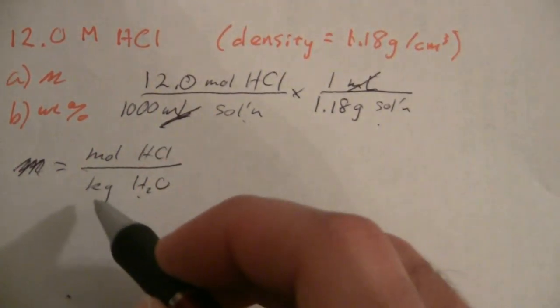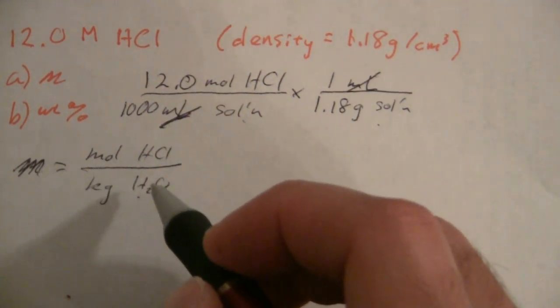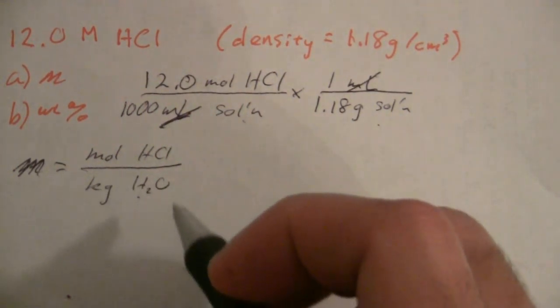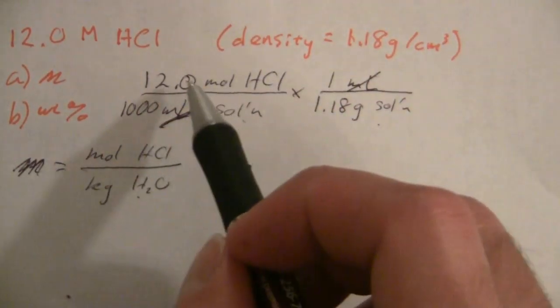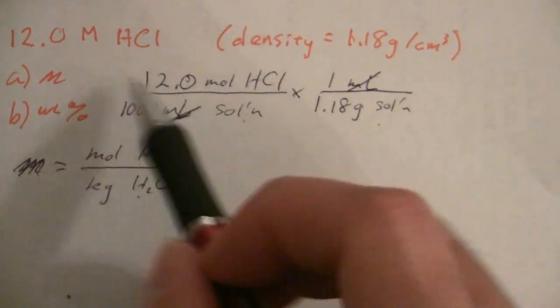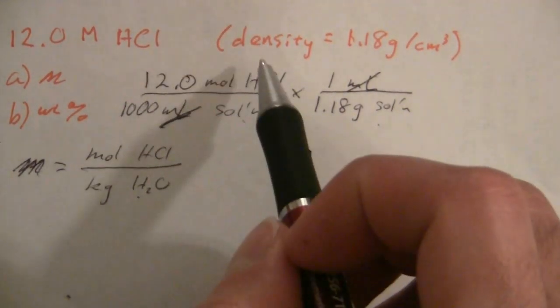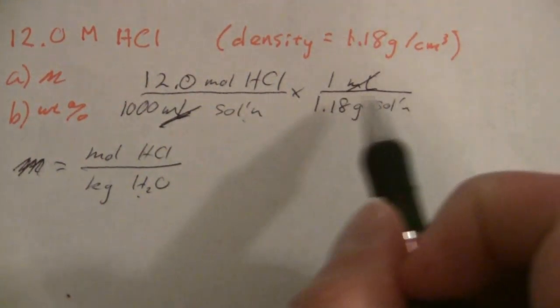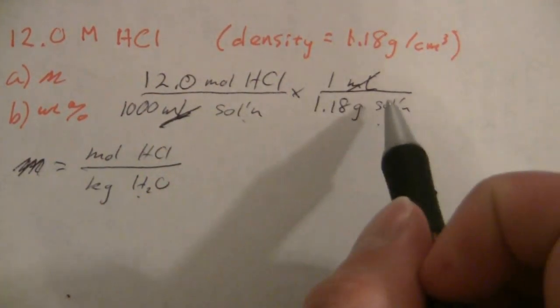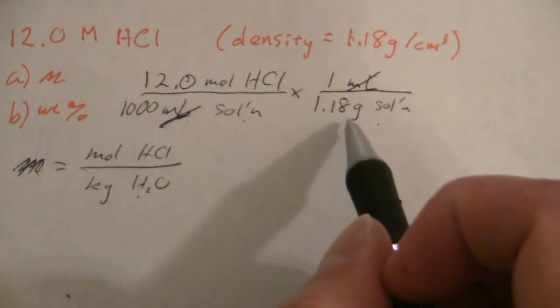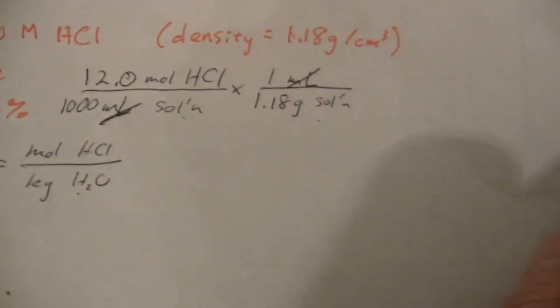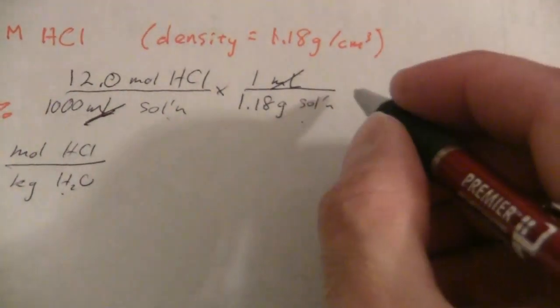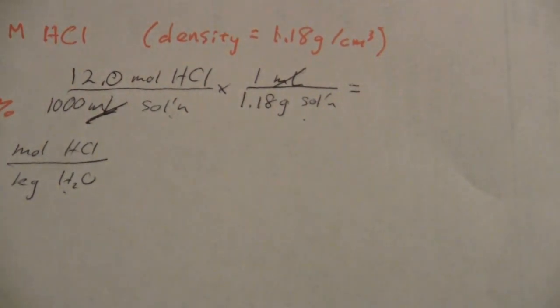All right, but I need kilograms of just the water. So if I know the total mass of the solution and I know the moles of HCl, which I can find the mass of HCl, I can find the mass of water that is in this mass of solution. So I think this will be the clearest if I go ahead and calculate this at this point.